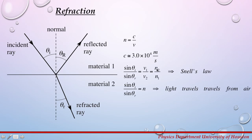Where n2 is the index of refraction for material 1. When light travels from air to a different material, Snell's law reduces to the equation sin θi divided by sin θr equals n, where n is the index of refraction for the medium to which the light travels from air.